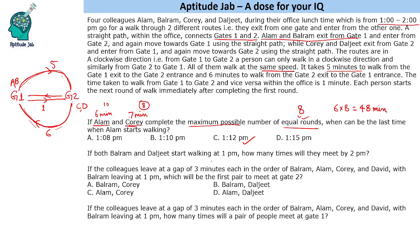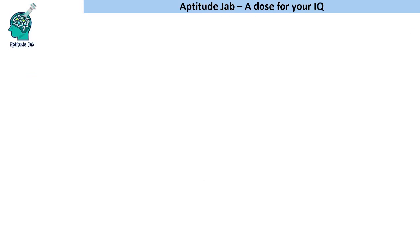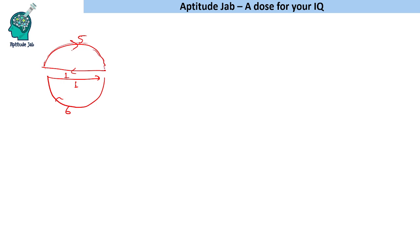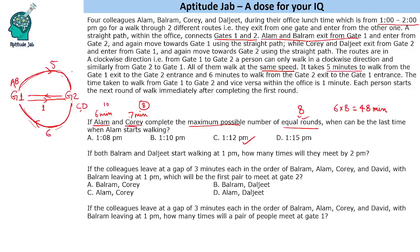Question 2: If both Balram and Daljeet start walking at 1 pm, how many times will they meet by 2 pm? They will meet either at gate 1, gate 2, or somewhere in between those two gates on the straight path — they will not meet in the outer route regions. They start walking at 1 pm, and we need to find how many times they meet by 2 pm.